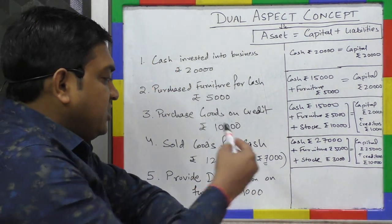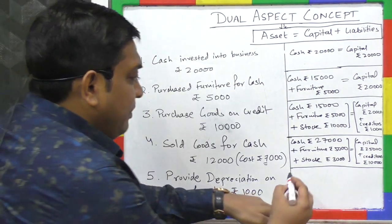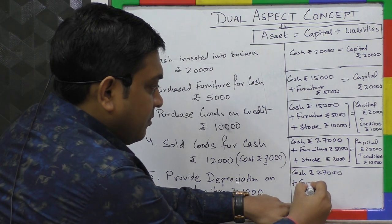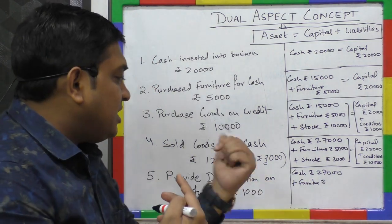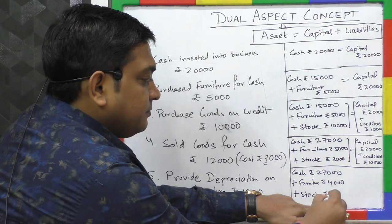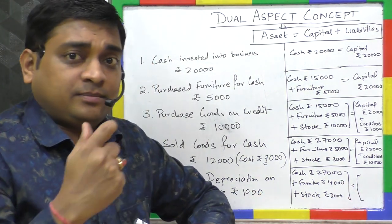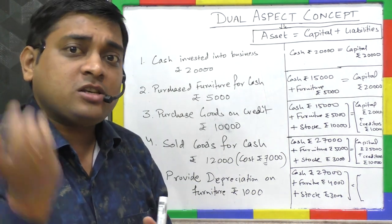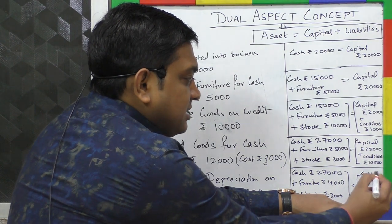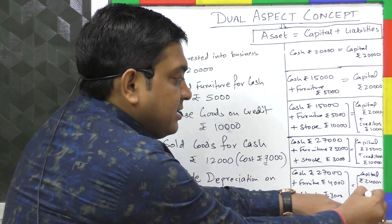Transaction 5: Provide depreciation on furniture rupees 1,000. Depreciation means we have derived a benefit and it is regarded as an expense. The value of furniture decreases by ₹1,000, giving a new furniture balance of ₹4,000. Since the owner bears all expenses, capital decreases by ₹1,000. New capital balance is ₹24,000. Creditors remain ₹10,000. The equation still holds.